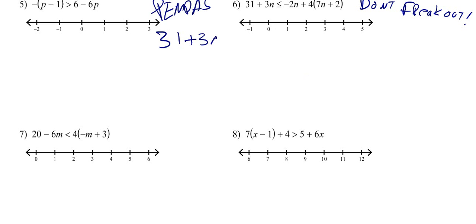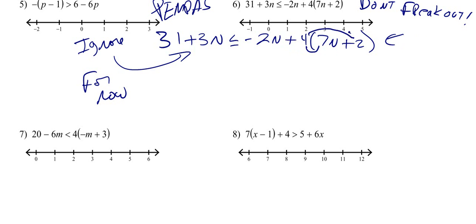You've got 31 plus 3n is less than or equal to negative 2n plus 4 times the quantity 7n plus 2. What I like to do is sort of ignore this inequality for now and forget about this stuff. Let's tackle this side. First thing we want to do is distribute. I always want to distribute first. Just remember that. You see parentheses, multiplication, all that comes before we're doing this adding of negative 2n. So 4 times 7 is 28n, and 4 times 2 is plus 8.